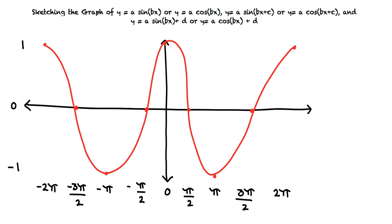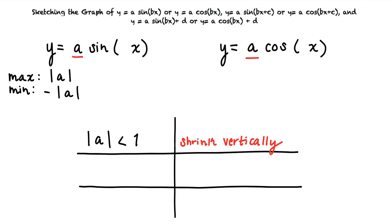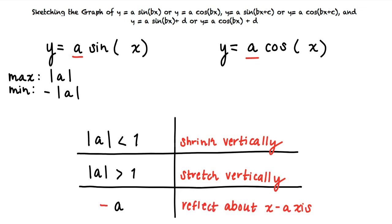Now that we know the general structures of both sine and cosine graphs, we can start to input constants and coefficients to the functions and see how these change our graphs. Multiplying the function by a means we multiply the y-coordinates of the points on the graph by a. This means the function y equals a of sine or cosine of x has a maximum of the absolute value of a and a minimum of the negative absolute value of a. If the absolute value of a is less than 1, the graph will shrink vertically. If the absolute value of a is greater than 1, the graph will stretch vertically. Changing the sign of a, for example changing it to negative a, will reflect the graph about the x-axis.